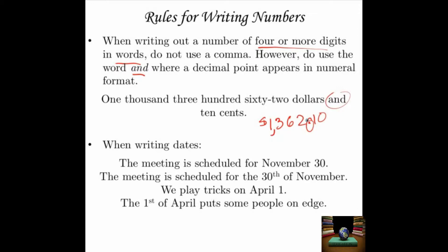When writing dates, follow this format: if the month comes first, just write the numeral — "The meeting is scheduled for November 30." But if the day comes first, add the ordinal suffix: "The meeting is scheduled for the 30th of November." Similarly, "We play tricks on April 1" — month then day, just the numeral — but "the 1st of April" — day then month, so you add the suffix ST.